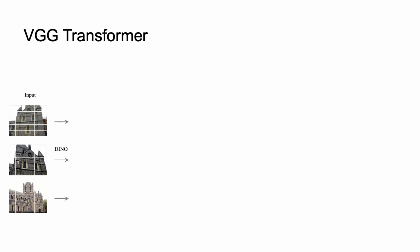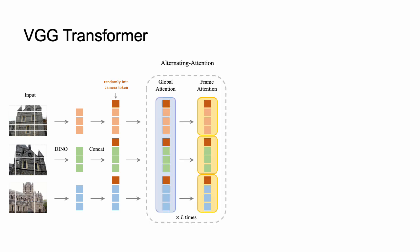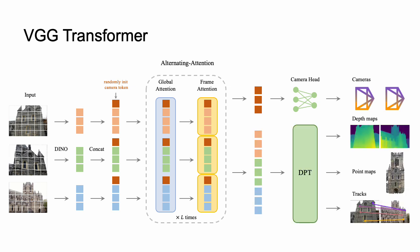Therefore, we introduce VGG Transformer. Given multiple frames, we first use DINOv2 to patchify each image into tokens. We then use a camera token to aggregate camera information. All tokens are concatenated and passed into an alternating attention module, which switches between global self-attention and frame-wise self-attention layers. Finally, we use a small transformer to decode the camera tokens into camera parameters, and a DPT head to convert the image tokens into dense outputs such as depth maps.